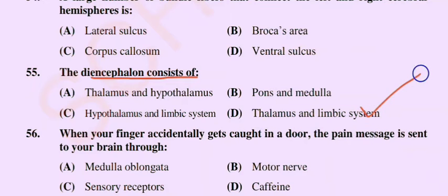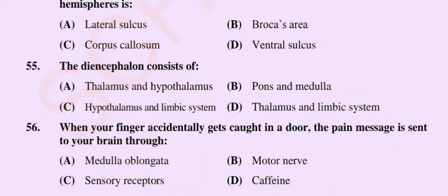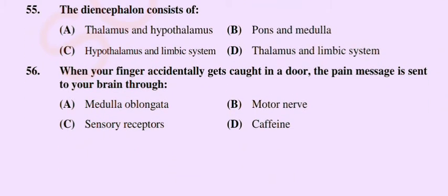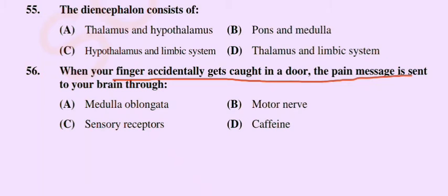Question number 56: When your finger accidentally gets caught in a door, the pain message is sent to your brain through — option A: medulla oblongata, option B: motor nerve, option C: sensory receptors, option D: caffeine. The correct option is option C: sensory receptors.